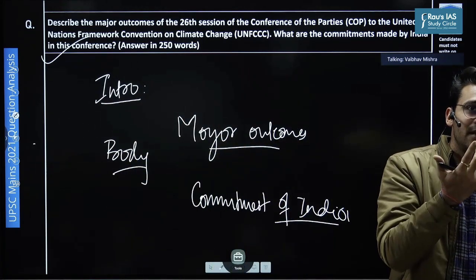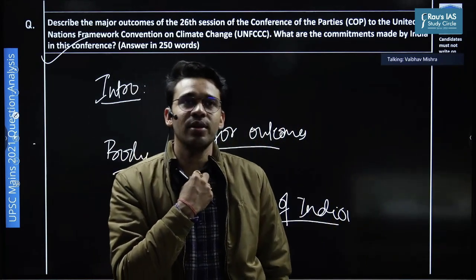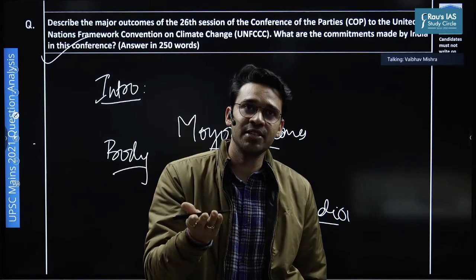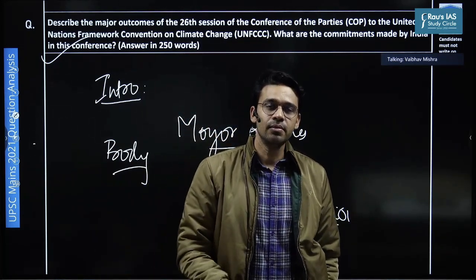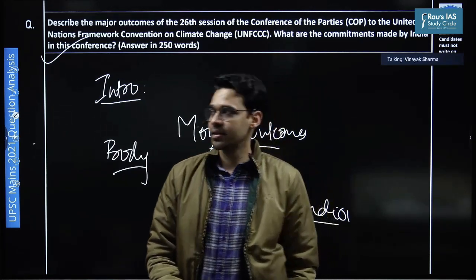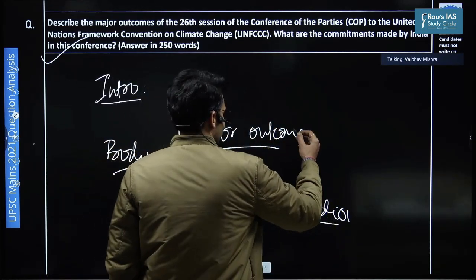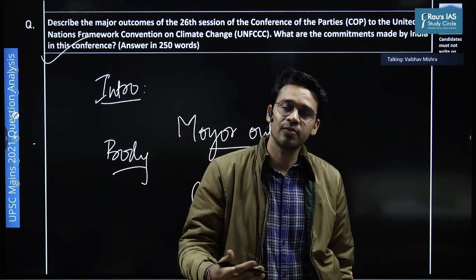So who can tell me the major outcomes of Glasgow UNFCCC? One of them is of course green grid initiative, which we discussed in the first question. That was a major outcome. One outcome was phase down of coal. Perfect.